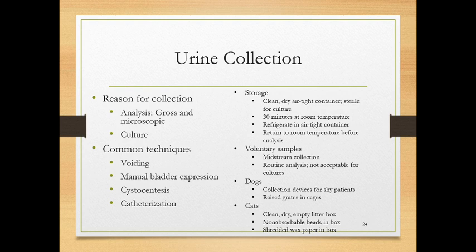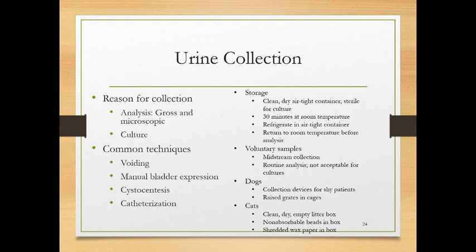Store urine in a clean, dry, airtight container. If culturing for bacteria, keep it for up to 30 minutes at room temperature, or refrigerate in an airtight container and return to room temperature before analysis. The sooner you analyze urine the more accurate the results — the longer it sits, the more likely crystallization and other changes will occur.